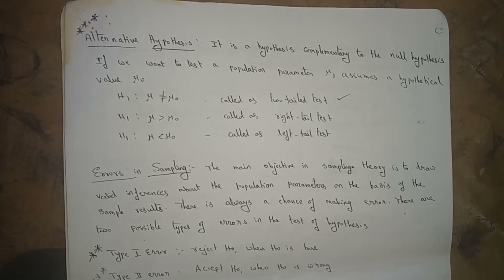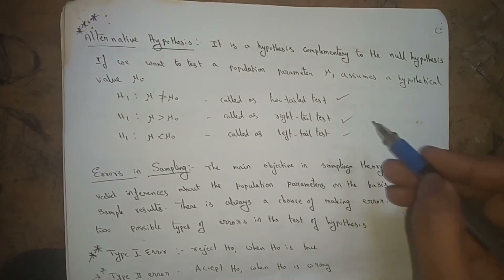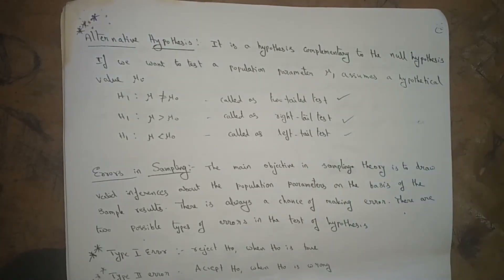If H₁: μ < μ₀, it is called a left-tailed test. All are important — left-tail, right-tail, and two-tailed tests.